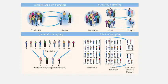Here is a visual example of each method. For simple random sampling, you have the entire population and just select people at random. For stratified sampling, you take your population, put them into non-overlapping groups, and then sample a few from each group. For cluster sampling, you take your population, put them into clusters, and then randomly select all the people in just a few clusters.